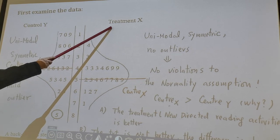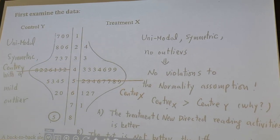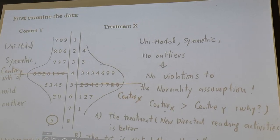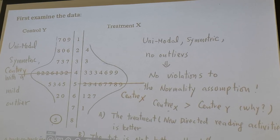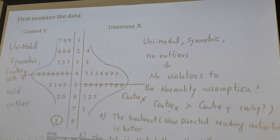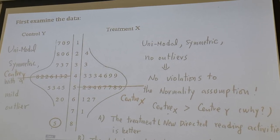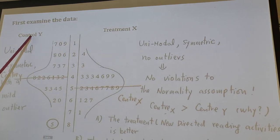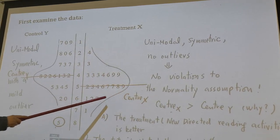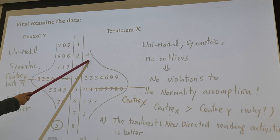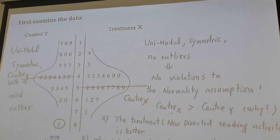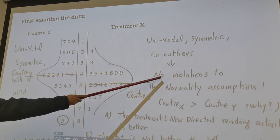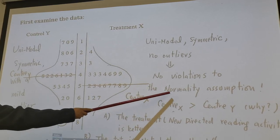This side is the DRP test score for the treatment group. The treatment is students using a new direct reading activity in the classroom. This is the data of 21 students in the treatment group. We make a smooth curve through the stem plot — you find it is unimodal, symmetric, and no outlier. So obviously there are no violations to the normality assumption.